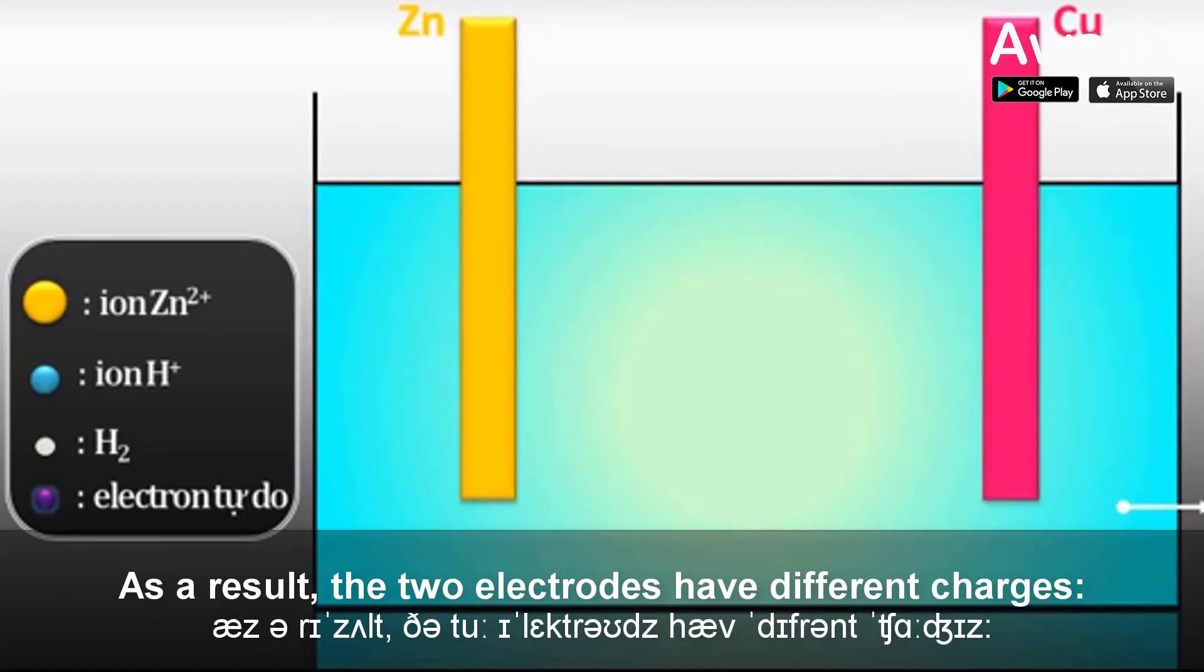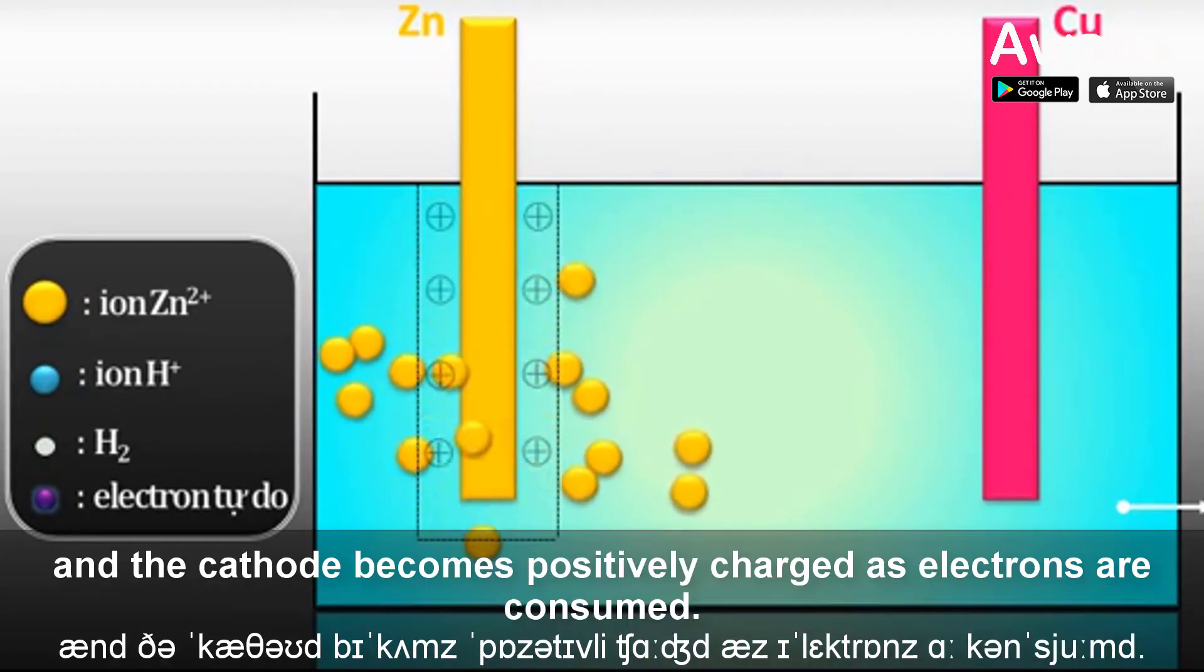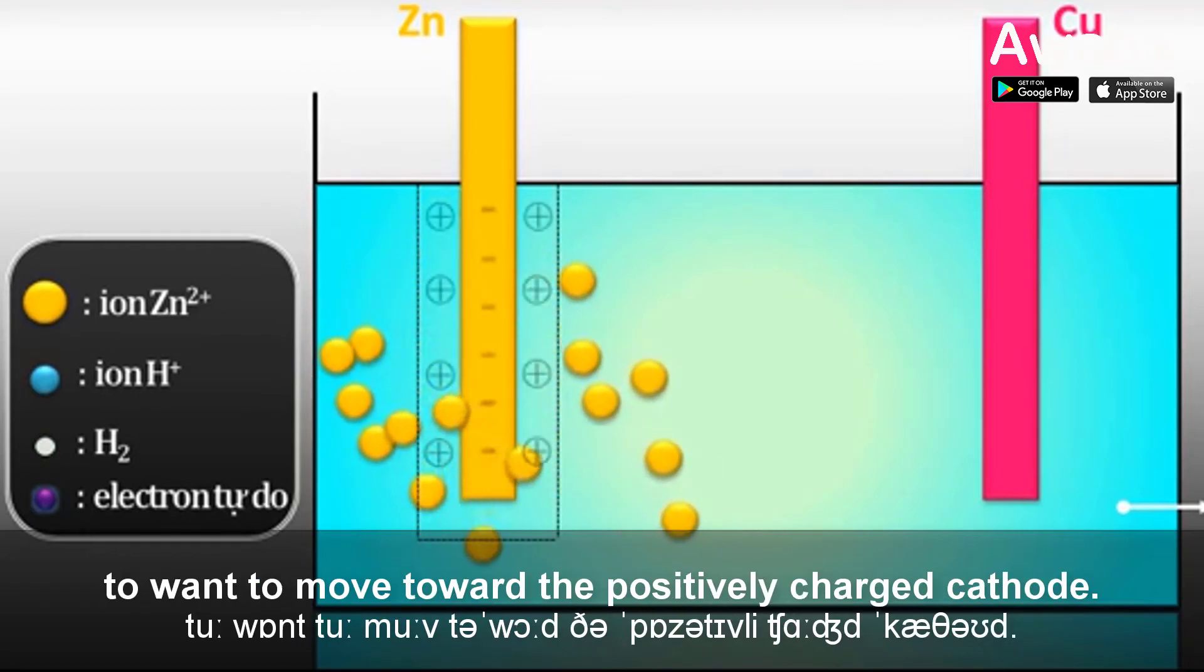As a result, the two electrodes have different charges. The anode becomes negatively charged as electrons are released, and the cathode becomes positively charged as electrons are consumed. This difference in charge causes the electrons to want to move toward the positively charged cathode.